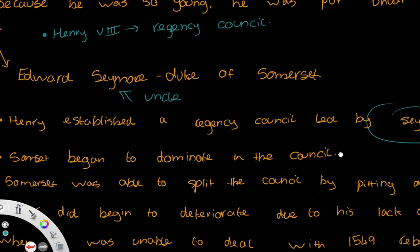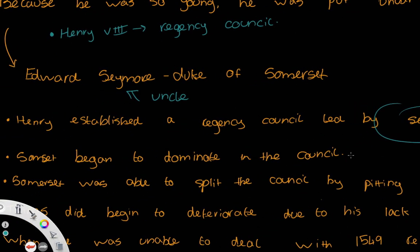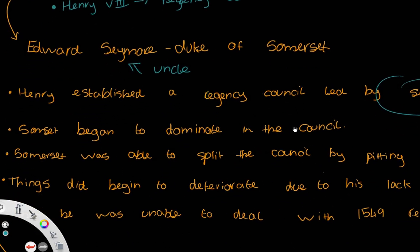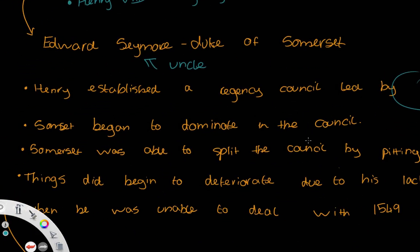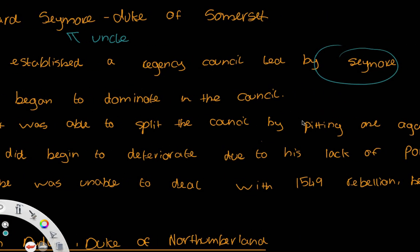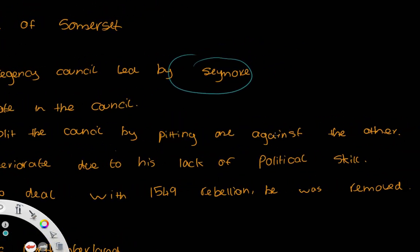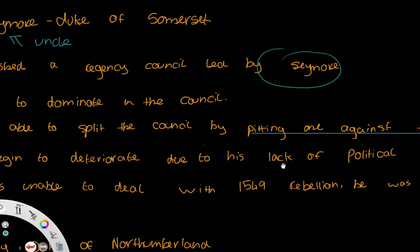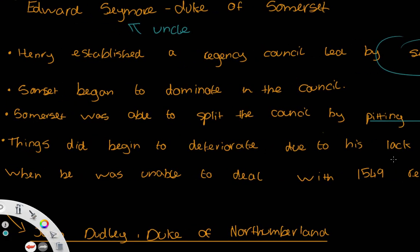When Henry died, Seymour began to dominate the council — something he wasn't supposed to do. He was supposed to be almost first among equals within the council: in charge, but not the one making every single decision. Instead he introduced political intrigue, pitting members of the council against each other, causing it to divide, so he was effectively ruling England on his own.